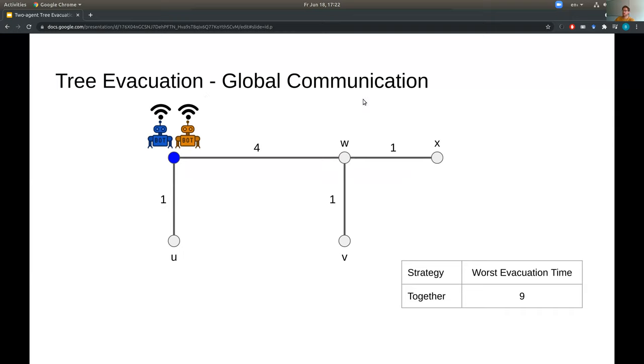So in this case, staying together still gives the worst evacuation time of 9, nothing changes here. But for splitting up, if the blue robot finds the exit at u, then the orange robot can simply turn around and head straight for the exit and reach it at time 3. So u is no longer the worst case for this exploration strategy. So in fact, the worst case will be x or v, both leading to an evacuation time of 7. So as you might have expected, global communication is more powerful. And in some cases, it can strictly lead to lower evacuation times than local communication.